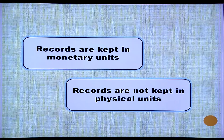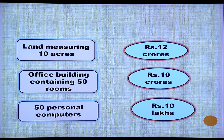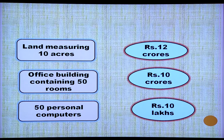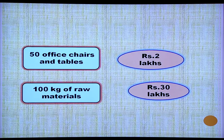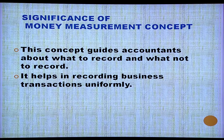Records are kept in monetary units, not in physical units. For example, instead of saying land measuring 10 acres, we say land worth rupees 12 crores. Instead of office building containing 50 rooms, we record it as office building worth rupees 10 crore. Instead of 50 personal computers, we say computers worth rupees 10 lakh. Instead of 50 office chairs and tables, we say worth rupees 2 lakh. Instead of raw materials of 100 kilo, we say raw materials worth rupees 3 lakh or 30 lakh. Money measurement concept guides accountants about what to record and what not to record.